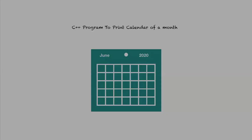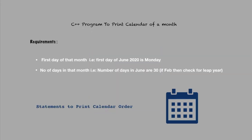Welcome to my channel. Today we will see a C++ program to print a calendar of a month. We need to get the first day of the month — for example, the first day of June 2020 is Monday — so we will write a function to get the day of the month.